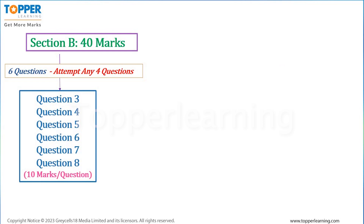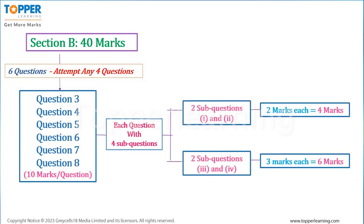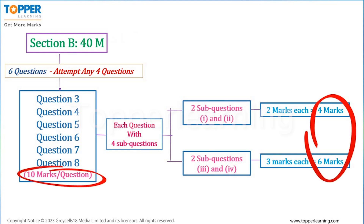Section B is of 40 marks. It comprises of 6 questions, out of which you have to attempt any 4 questions. Each question carries 10 marks. Each question will have 4 sub-questions: 2 sub-questions will carry 2 marks each, hence total 4 marks, while the other 2 sub-questions will carry 3 marks each, hence total 6 marks. Thus, 4 marks plus 6 marks gives you total 10 marks per question. 10 marks into 4 questions gives 40 marks for Section B.